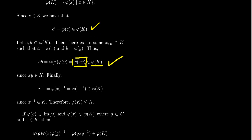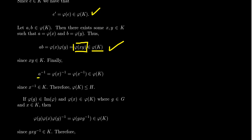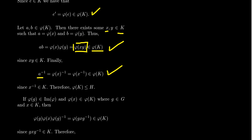For inverses: if A equals phi of X, then A inverse equals phi of X to the inverse, which equals phi of X inverse, as we proved earlier. Since K is a group and X is in K, X inverse is in K, which means phi of X inverse is in phi of K. So phi of K is closed under inverses. Since it's closed under identity, multiplication, and inverses, phi of K is a subgroup of H.